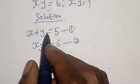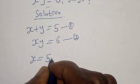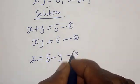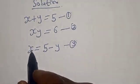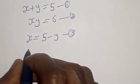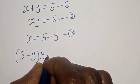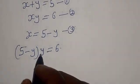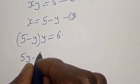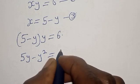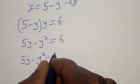From equation 1, let's make s the subject of the formula. We have s is equal to 5 minus y — let's call this equation 3. Now let's substitute equation 3 into equation 2. Wherever you see s, put 5 minus y. Now we have 5 minus y, multiplied by y, equals 6.